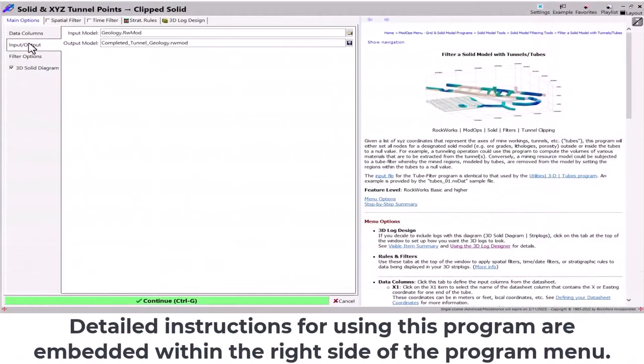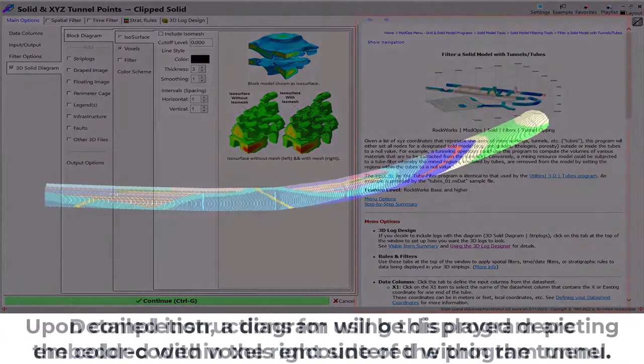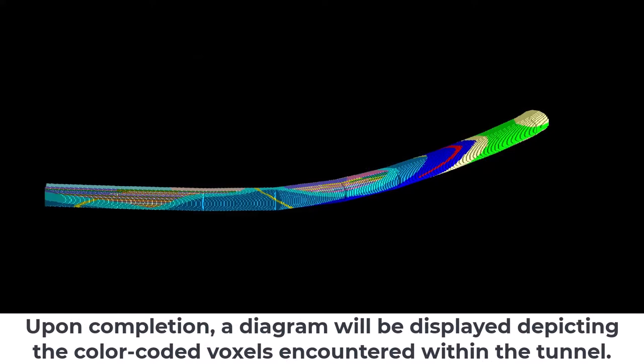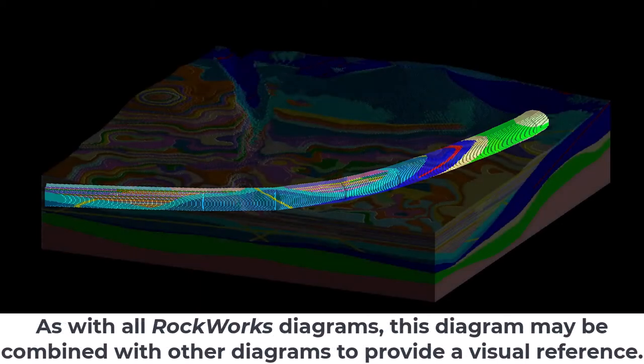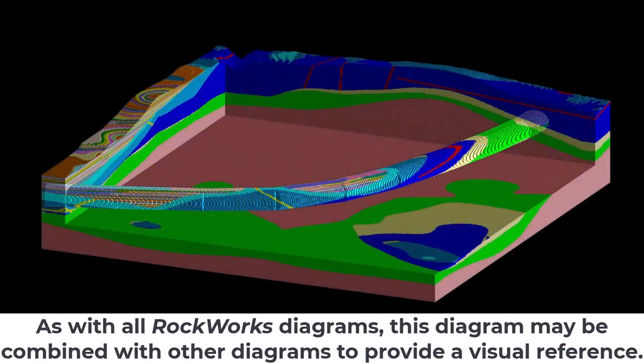Detailed instructions for using this program are embedded within the right side of the program menu. Upon completion, a diagram will be displayed depicting the color-coded voxels encountered within the tunnel. As with all RockWorks diagrams, this diagram may be combined with other diagrams to provide a visual reference.